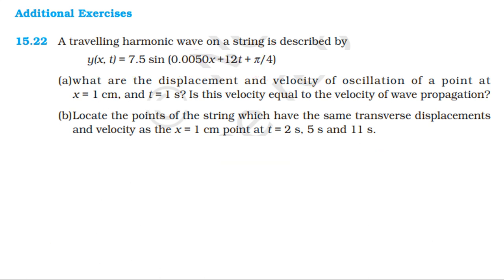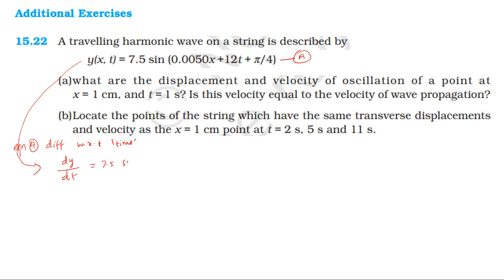If we want the particle velocity, we differentiate the displacement equation with respect to time. dy/dt is equal to 7.5 sin(kx + ωt + 5π/4) differentiated — that is, 7.5 into 12 into cos(0.005x plus 12t plus 5π/4), where the coefficient of t gives 12.